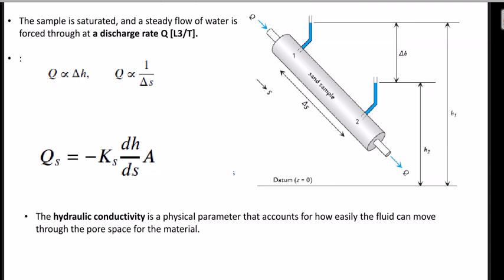Henry Darcy experimented upon a sand sample. As you can see in the image, it was a tube-like sample of sand, and he passed a certain amount of water through it.